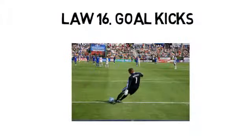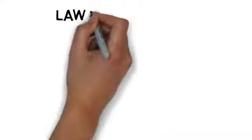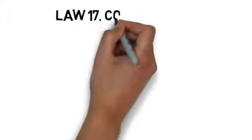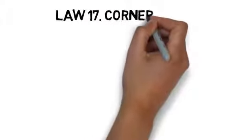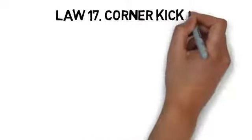Law 16: goal kicks. If the ball goes over the end line and was last touched by the attacking team, the defending team is awarded a goal kick to put the ball back into play. Anyone on the team can execute the goal kick.